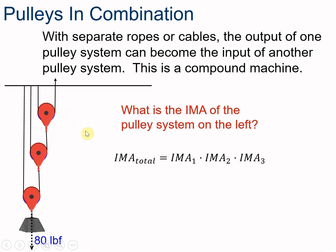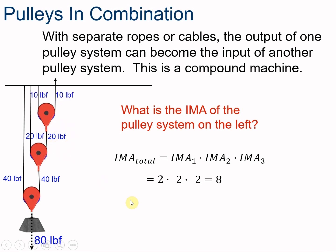We multiply the IMA of all three pulleys together. This has two strands, this has two strands, and this one has two strands — three different machines. So the total IMA is the IMA of each pulley system multiplied together. If this is 80 pounds, it needs 40 and 40 holding it up; if that resistance is 40 pounds, then 20 and 20; and if that force is 20 pounds, then 10 and 10 to be equal and opposite. Multiply 2 times 2 times 2 and you get 8 — an ideal mechanical advantage of 8.